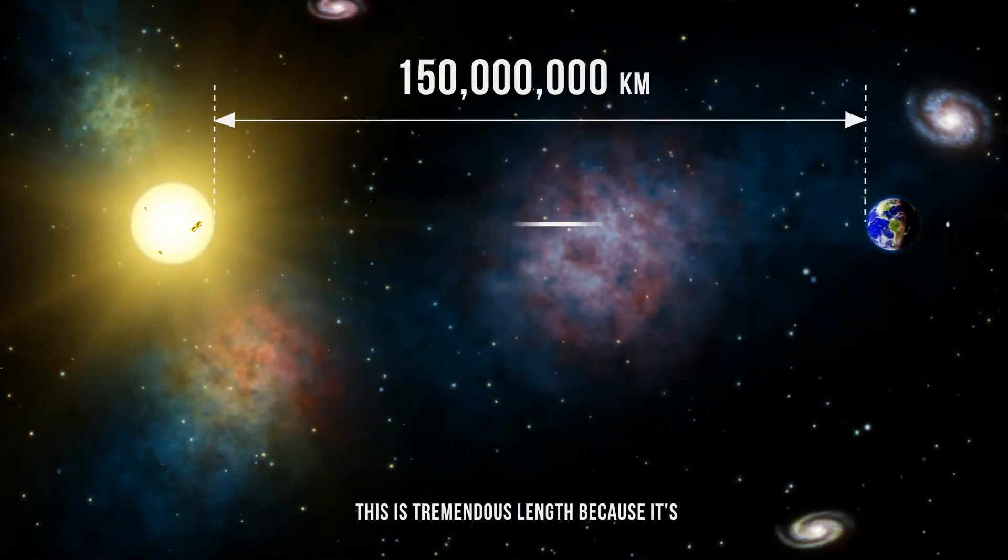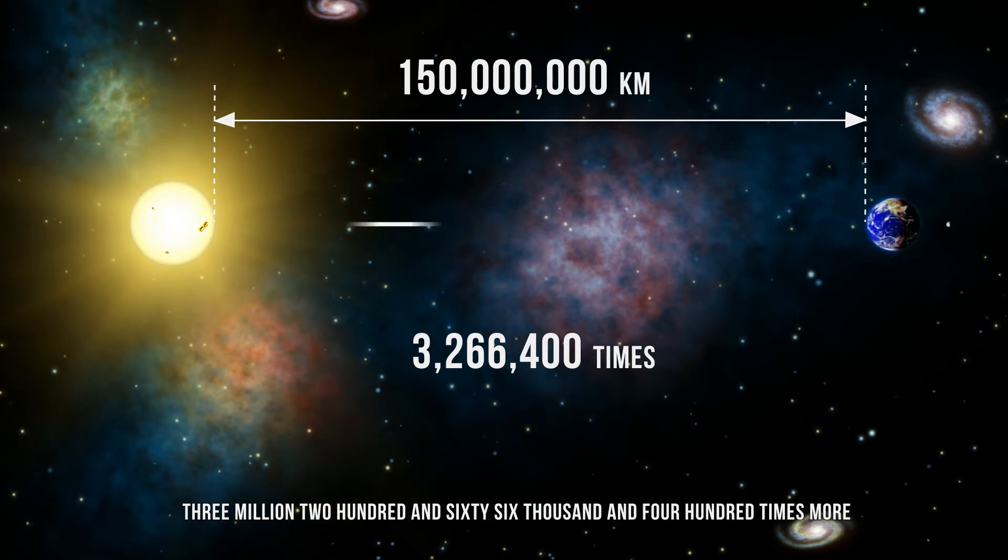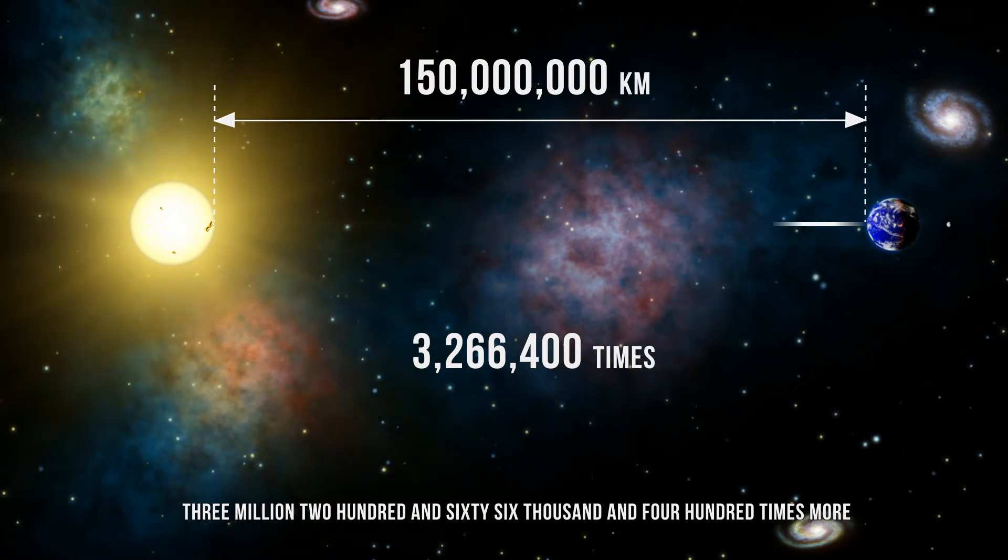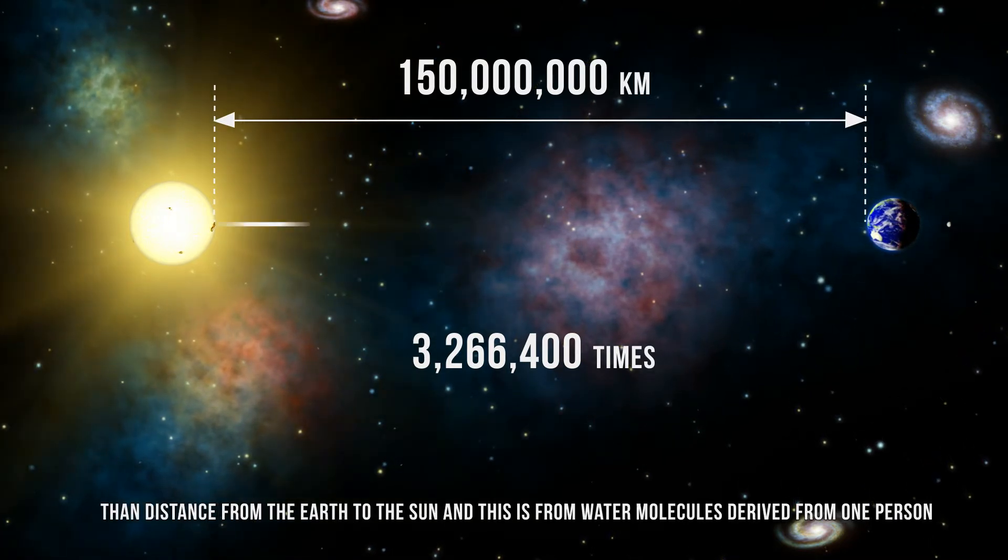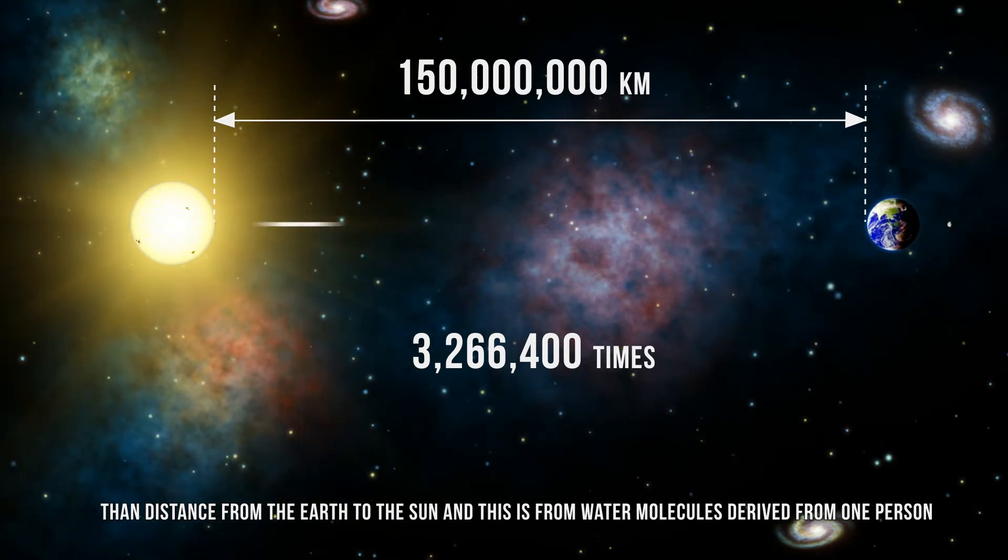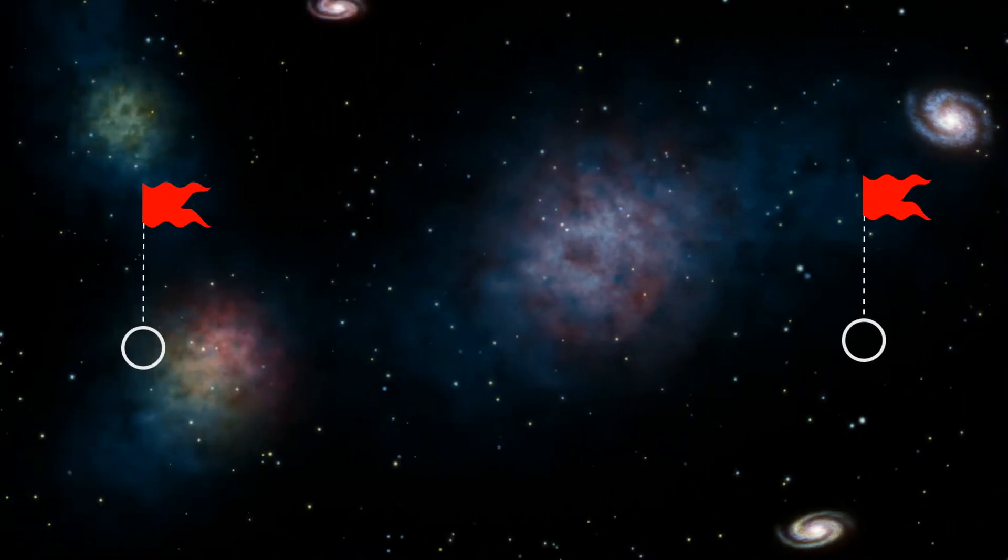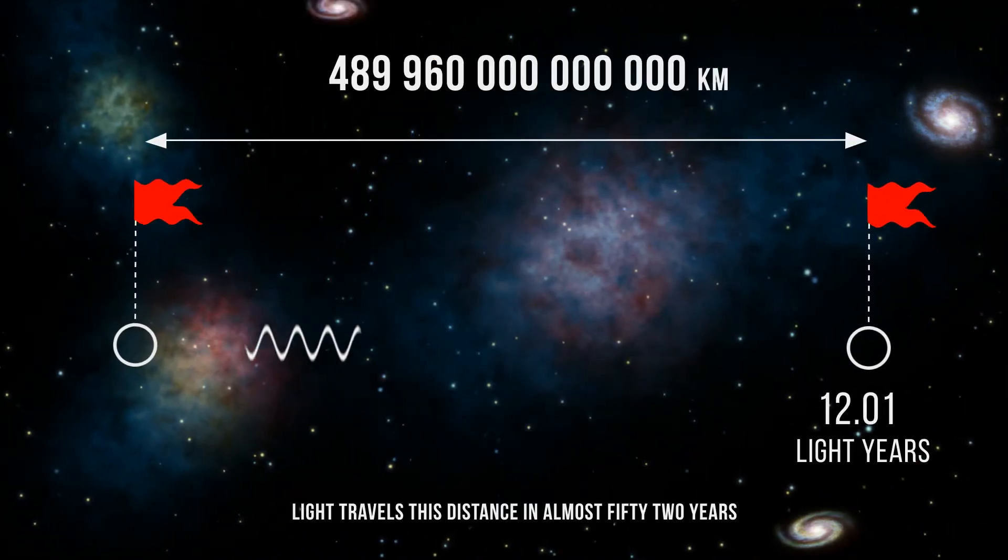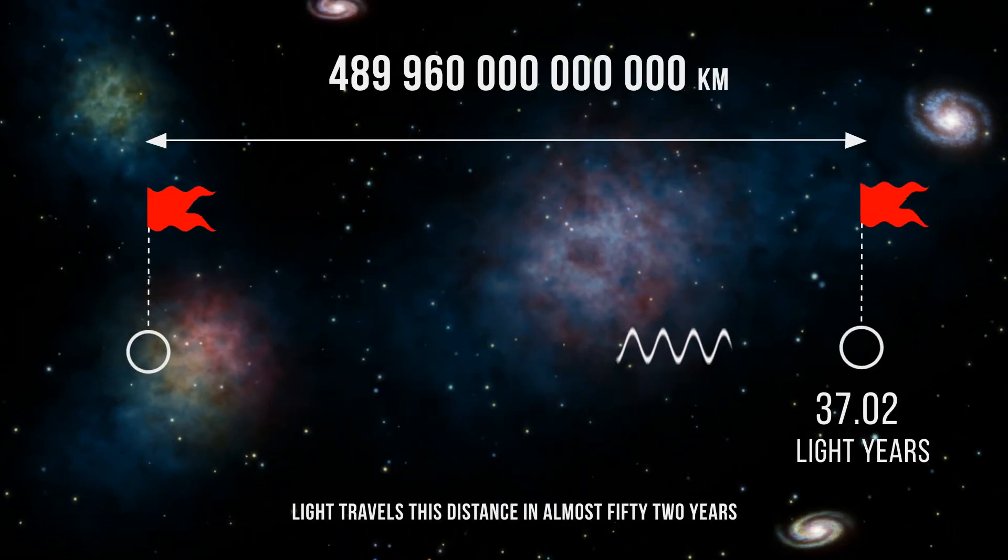This is tremendous length because it's 3 million 266 thousand and 400 times more than distance from the Earth to the Sun, and this is from water molecules derived from one person. Light travels this distance in almost 52 years.